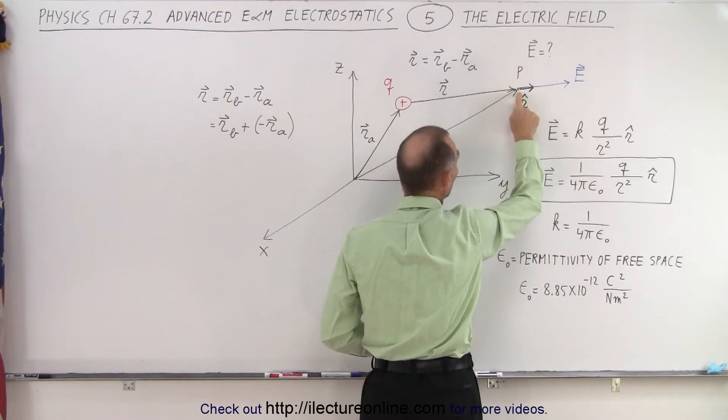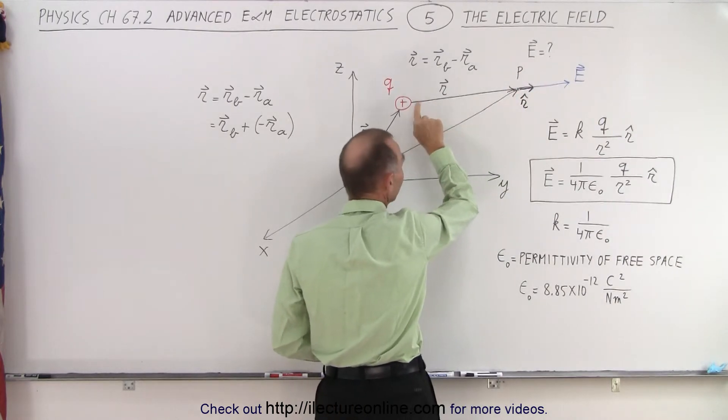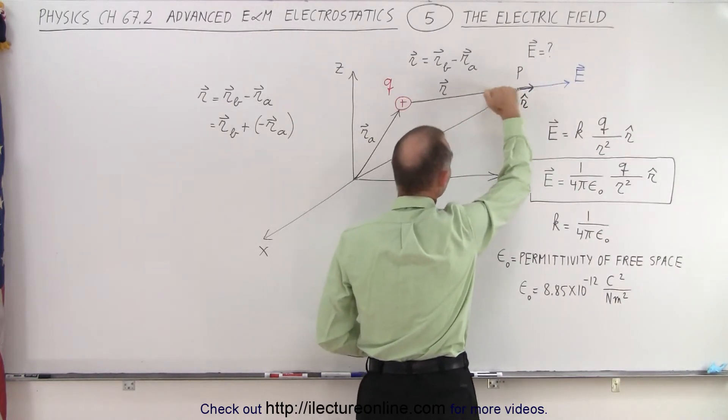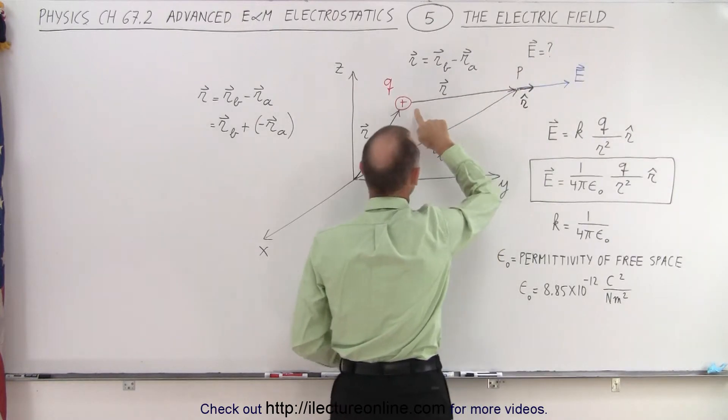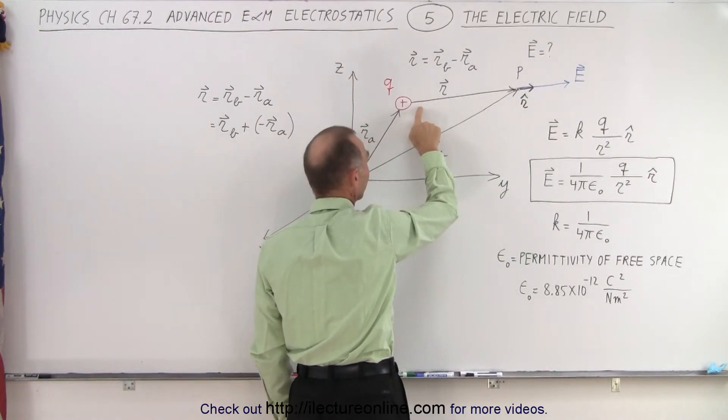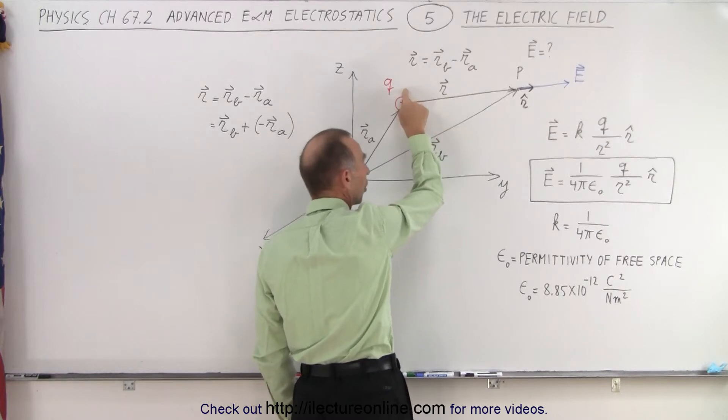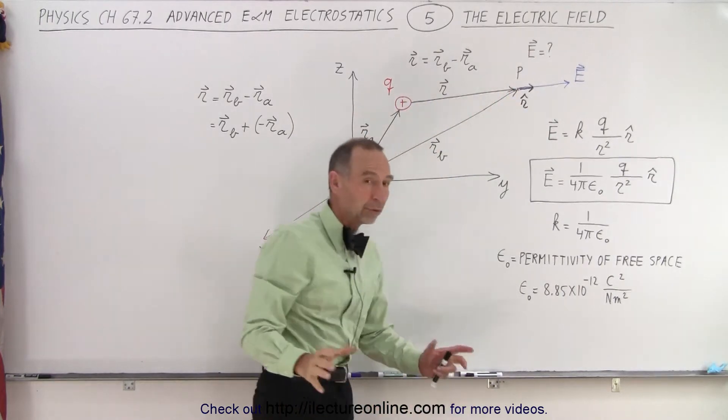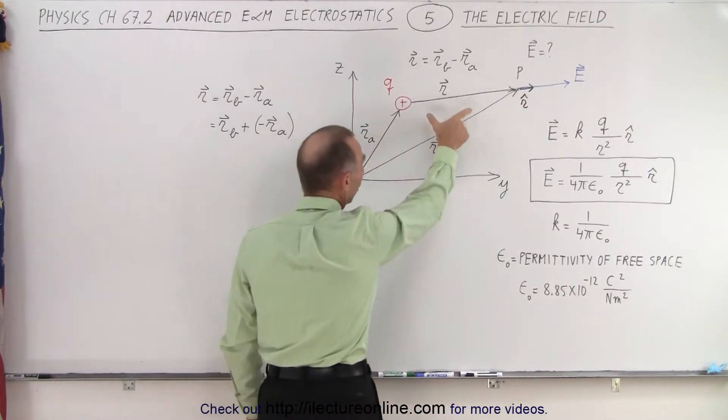If we want to know what the electric field is, we know it's going to emanate away from the positive charge along this line, in the same direction as the vector that represents the distance and direction from the charge to the point in space where we want to know the electric field. We call that the r vector.